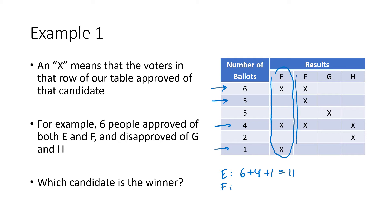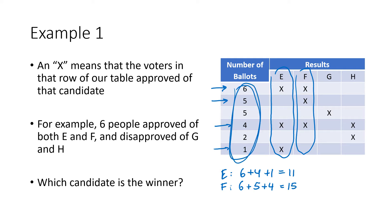Candidate F got six ballots from the first X, five from the second, and four from the third, so 15. G only gets five votes, and H gets four plus two, which is six. Of all the totals we find the largest — in this case that's candidate F — so F wins.